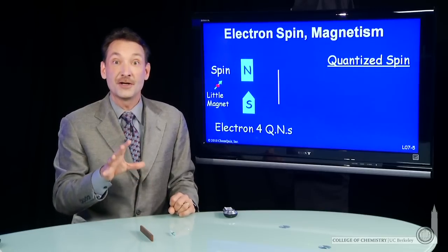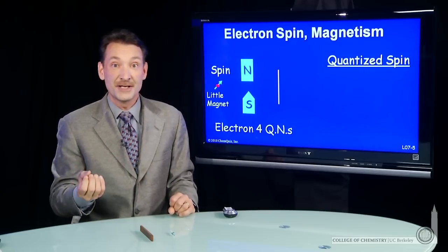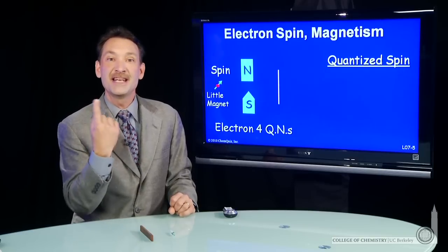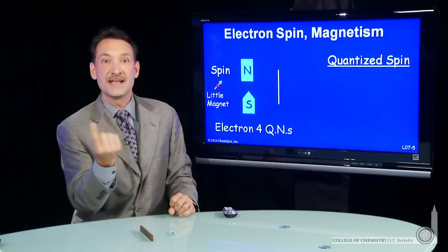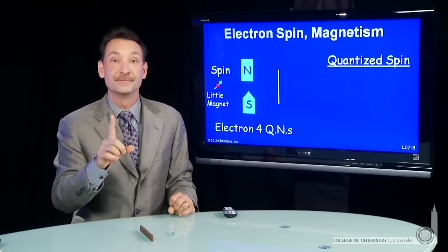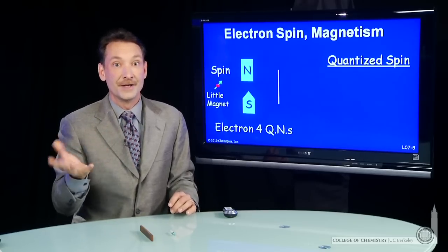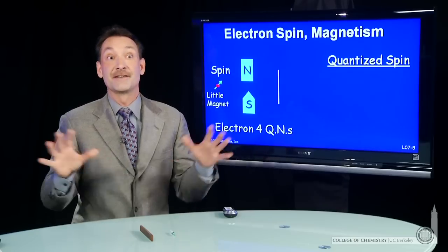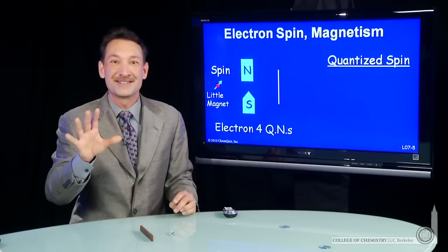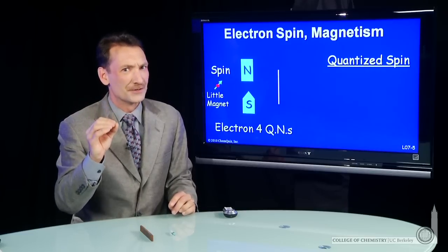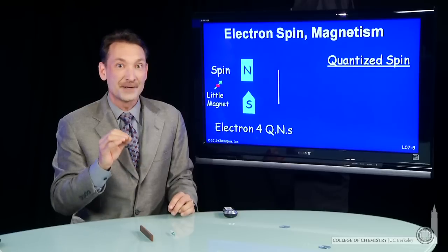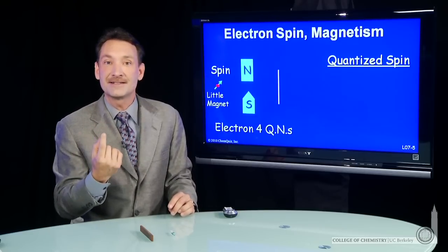Electrons have a property called spin. Now it's called spin for historical reasons because it behaves like a spinning charge. Electrons are charged, and if they spun around their axis, they would create a tiny magnetic field. Now electrons undoubtedly don't spin about the axis. They might not even have an axis. No one's ever seen an electron. It's one of the interesting parts of science. No one has ever seen one of those things. We don't know what it looks like. But the electron has a property that behaves like it's spinning around an axis.